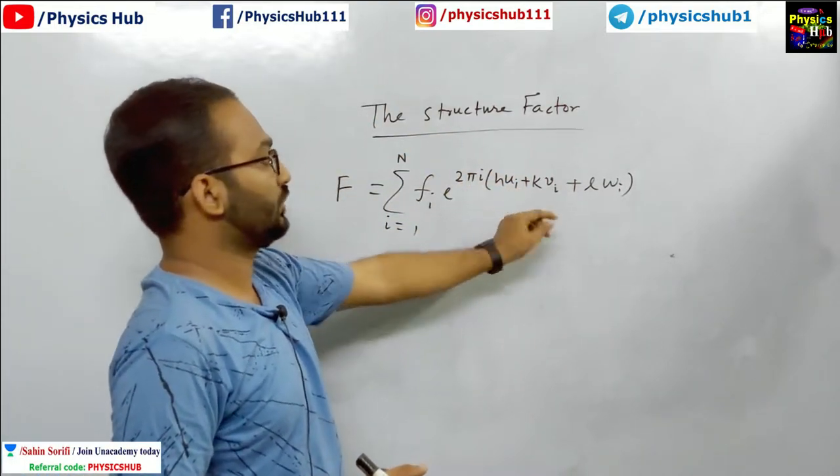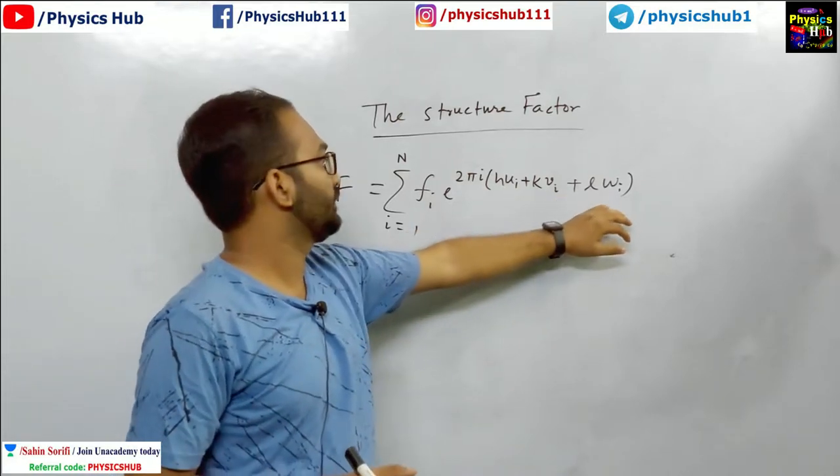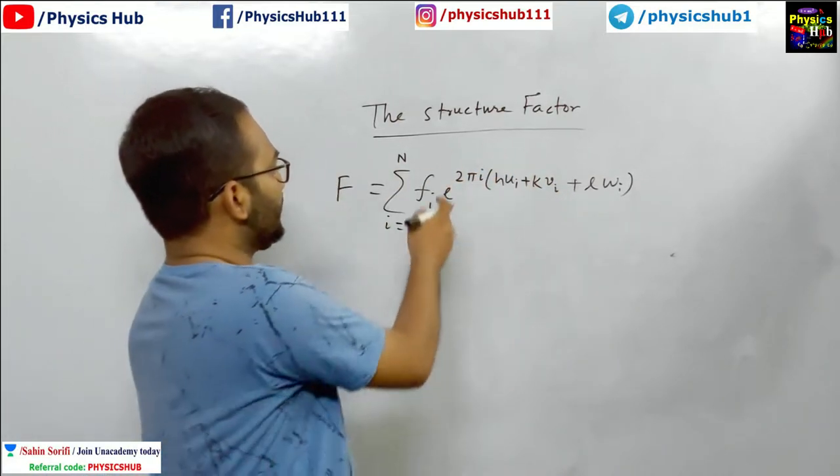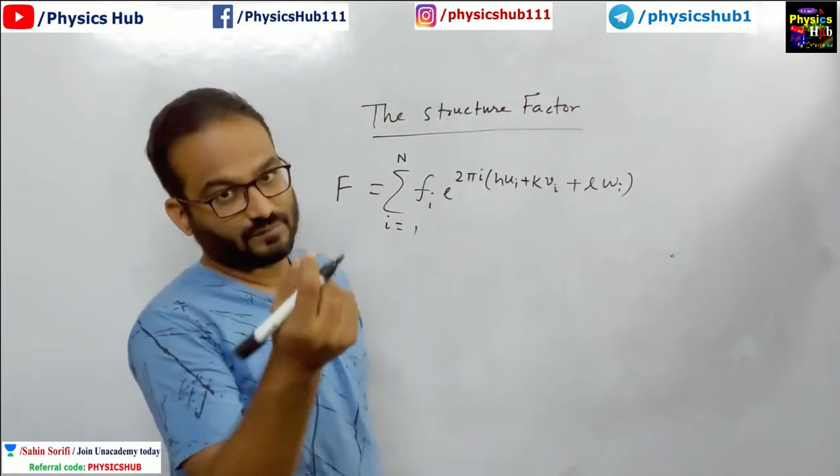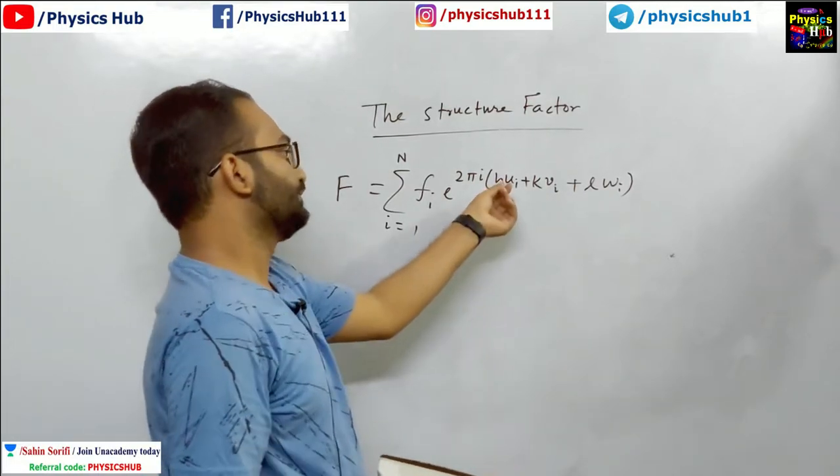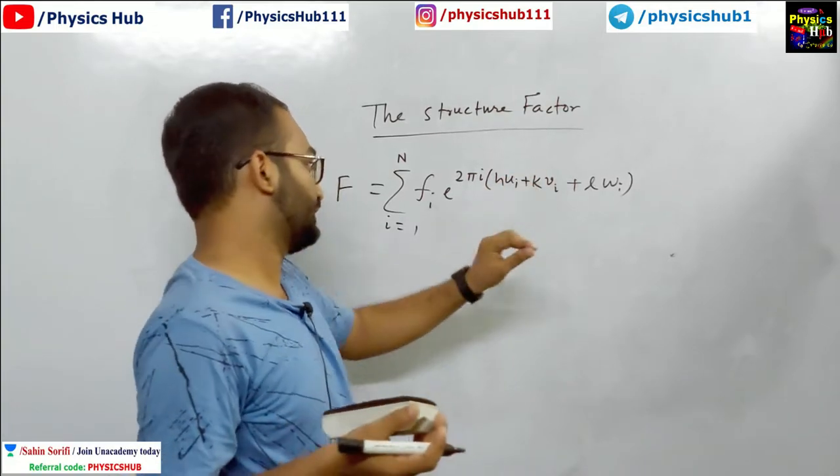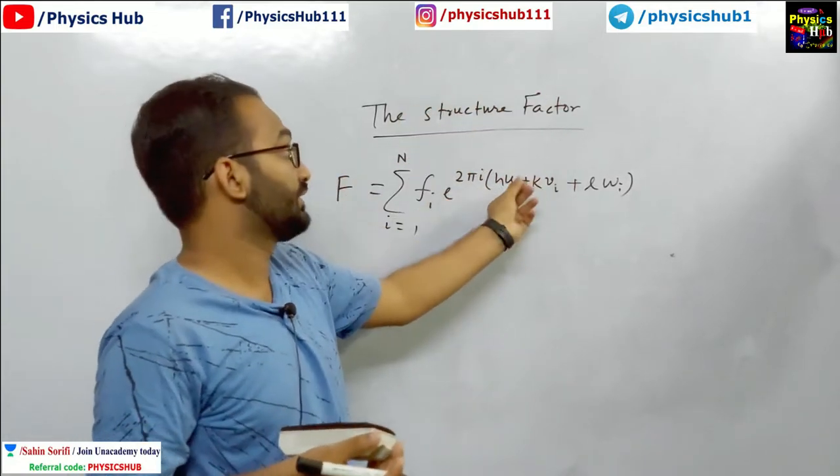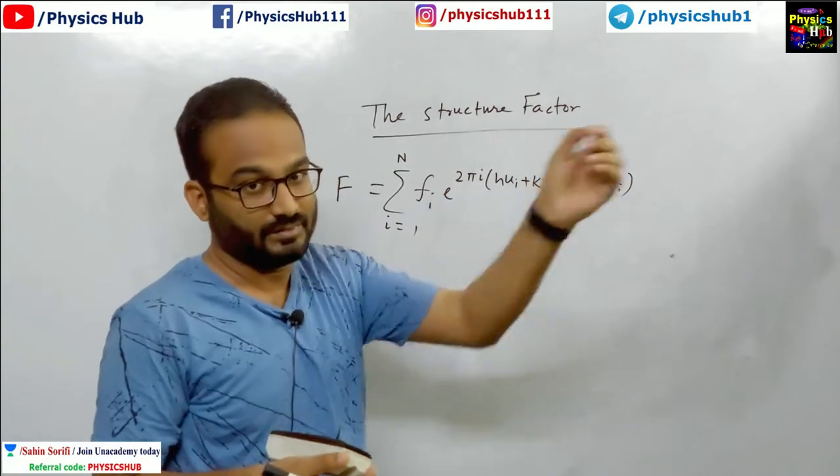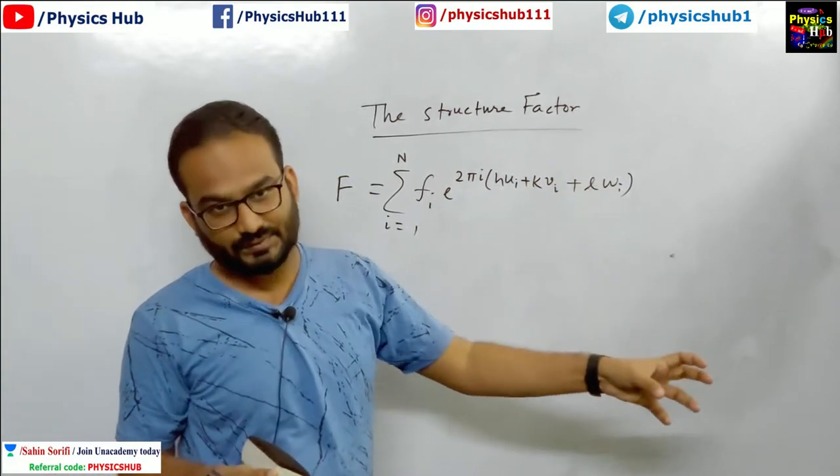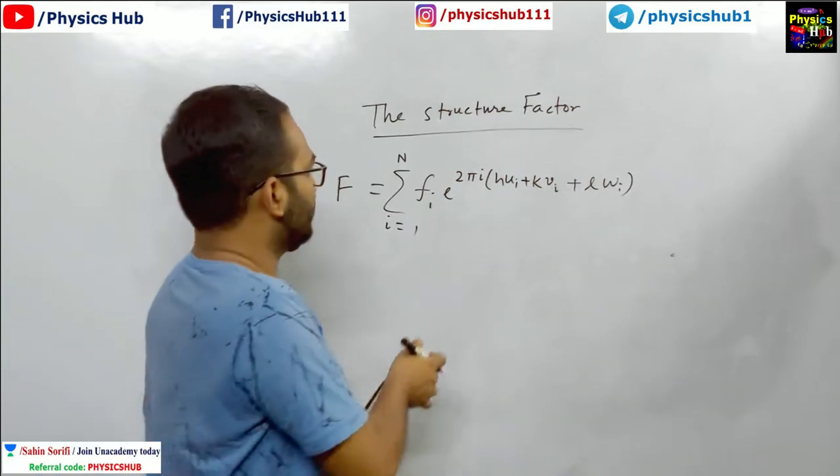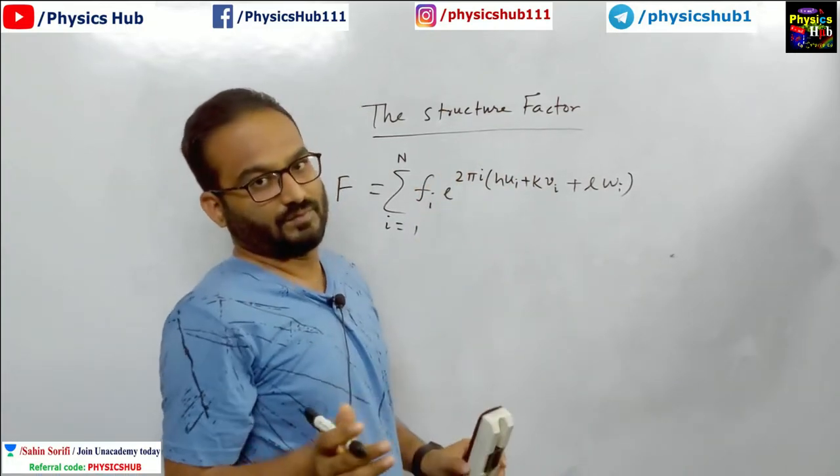So this h, k, l are the Miller indices. u_i, v_i, w_i are the atom positions, the coordinates of the atoms. Let's say n number of atoms are there in the unit cell. These are the coordinates of those atoms: u_i, v_i, and w_i. And f is known as the atomic scattering factor. This will depend upon the nature of the atoms. For identical atoms, the value of f will be same for all of them.